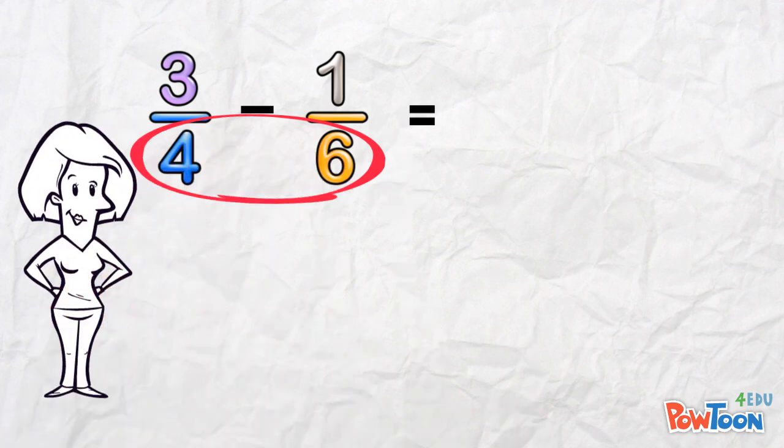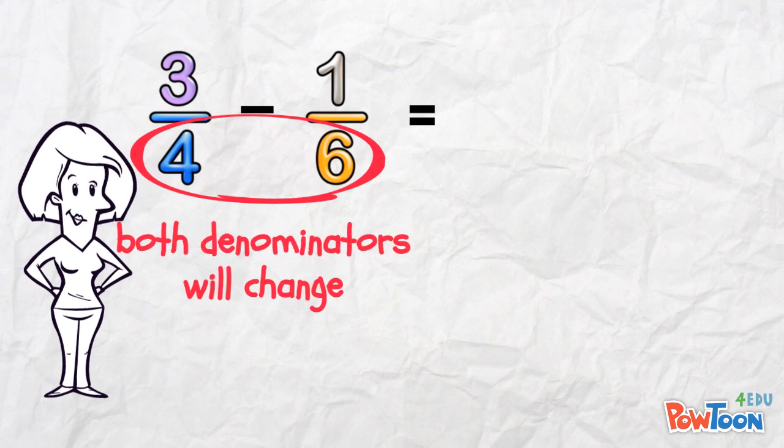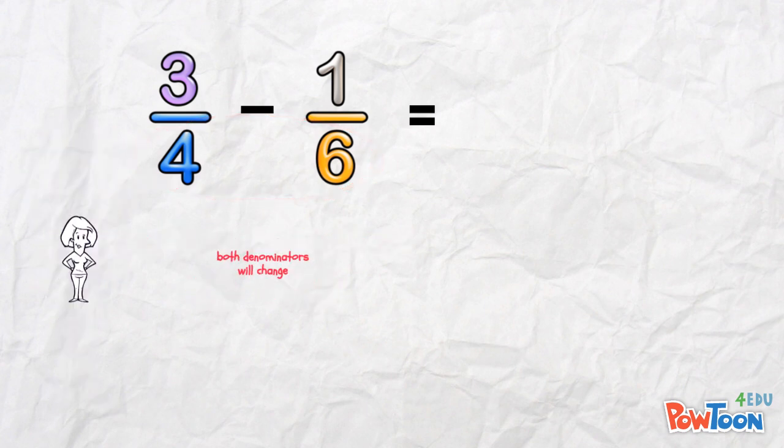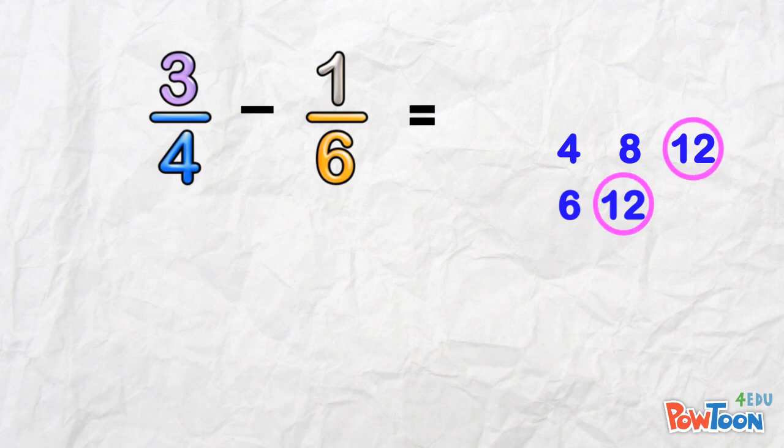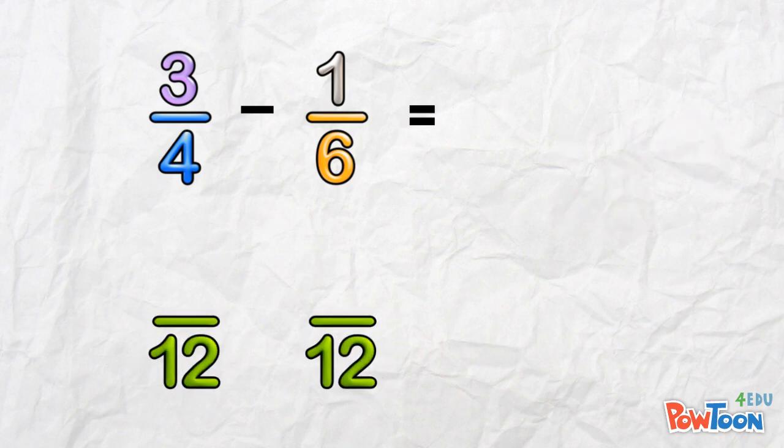4 is not a factor of 6, so both denominators are going to change. Think about multiples of 4 and multiples of 6. 12 is in both sets of multiples. So 12 is the lowest common denominator. Put it in the answer now.